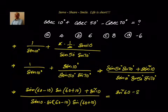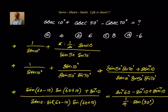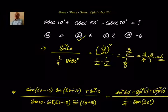That is sine squared 60 minus sine squared 10, plus sine squared 10, divided by the denominator. Sine squared 10 cancels. We are left with sine squared 60 in the numerator. And the denominator, coming to this formula: sine a · sine(60 minus a) · sine(60 plus a) equals 1 by 4 sine 3a. Here a equals 10, so the denominator becomes 1 by 4 · sine 30.